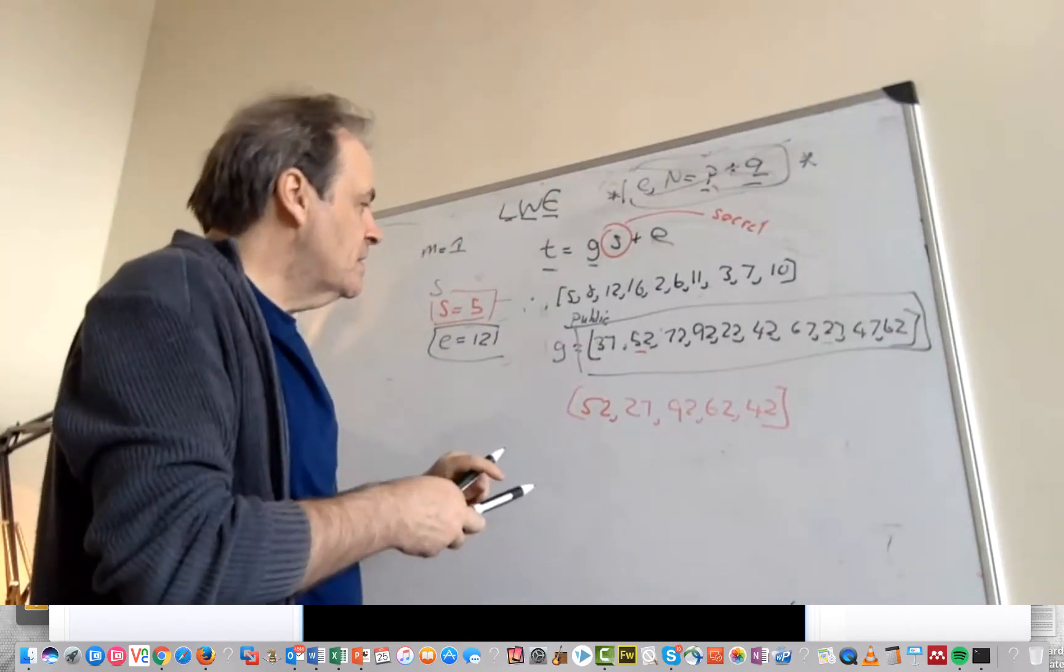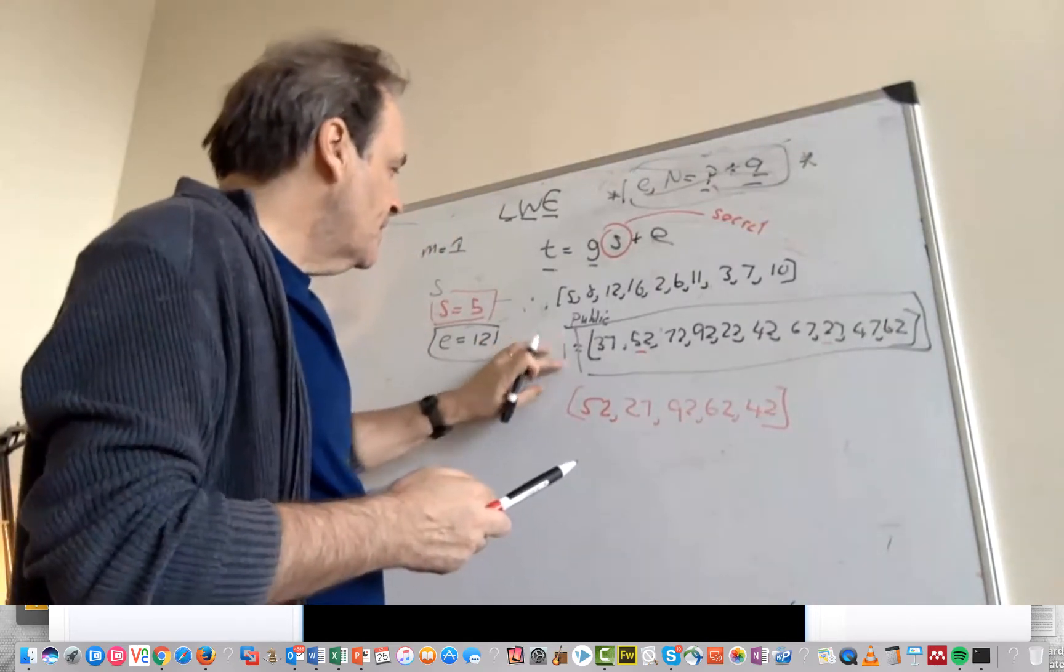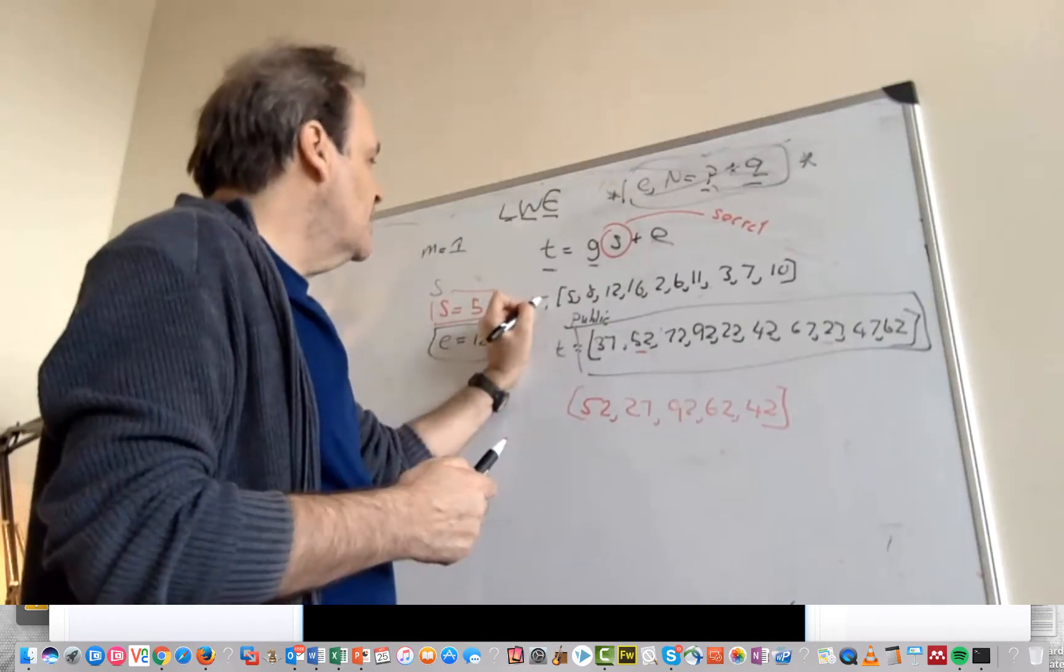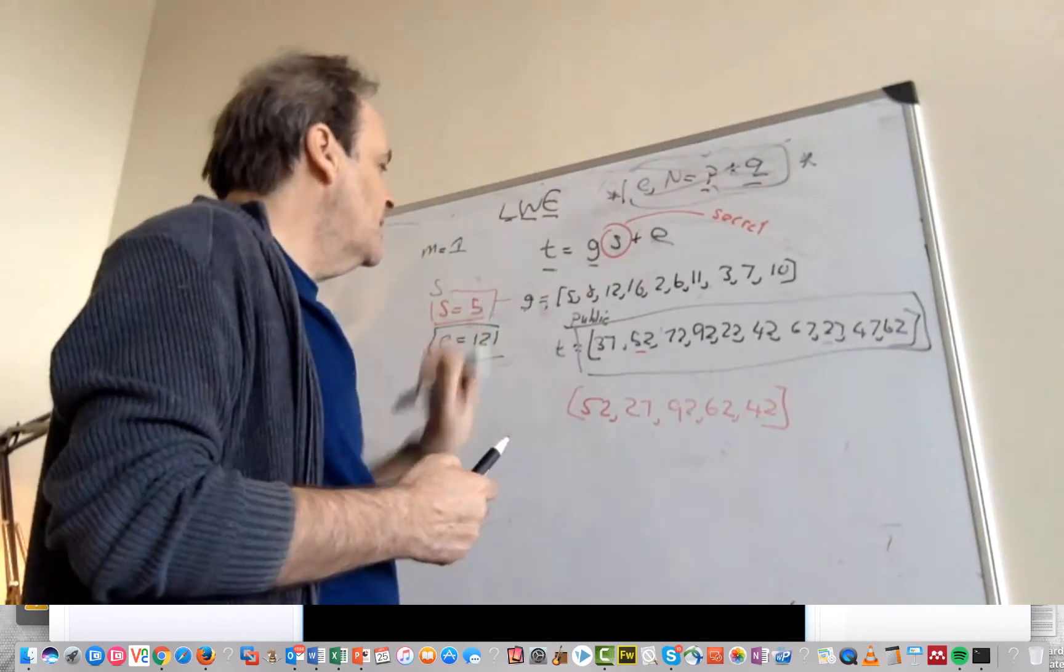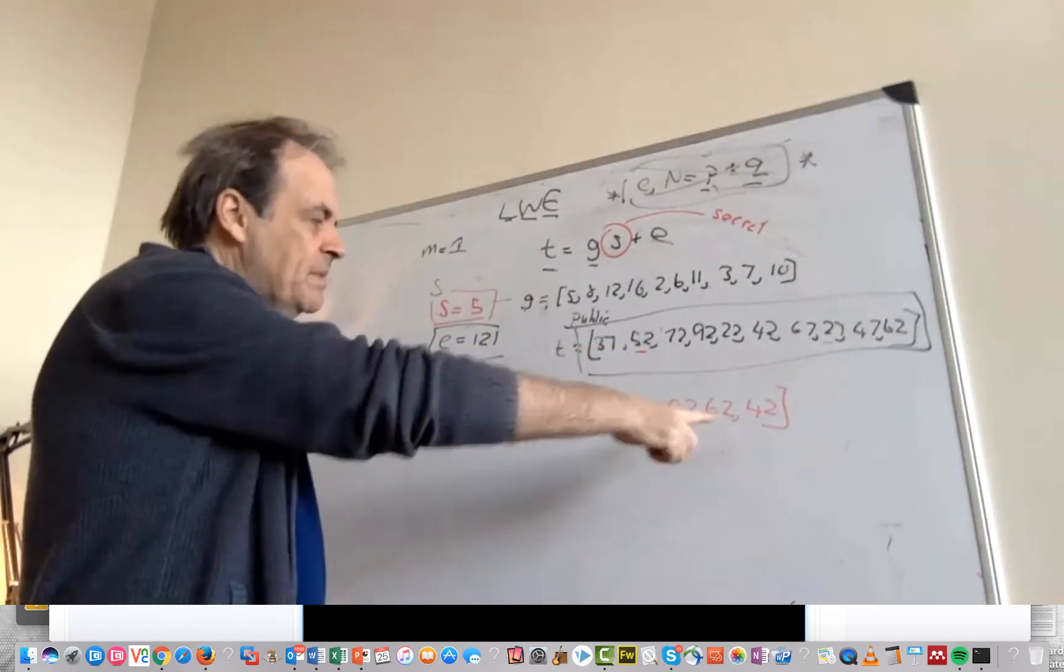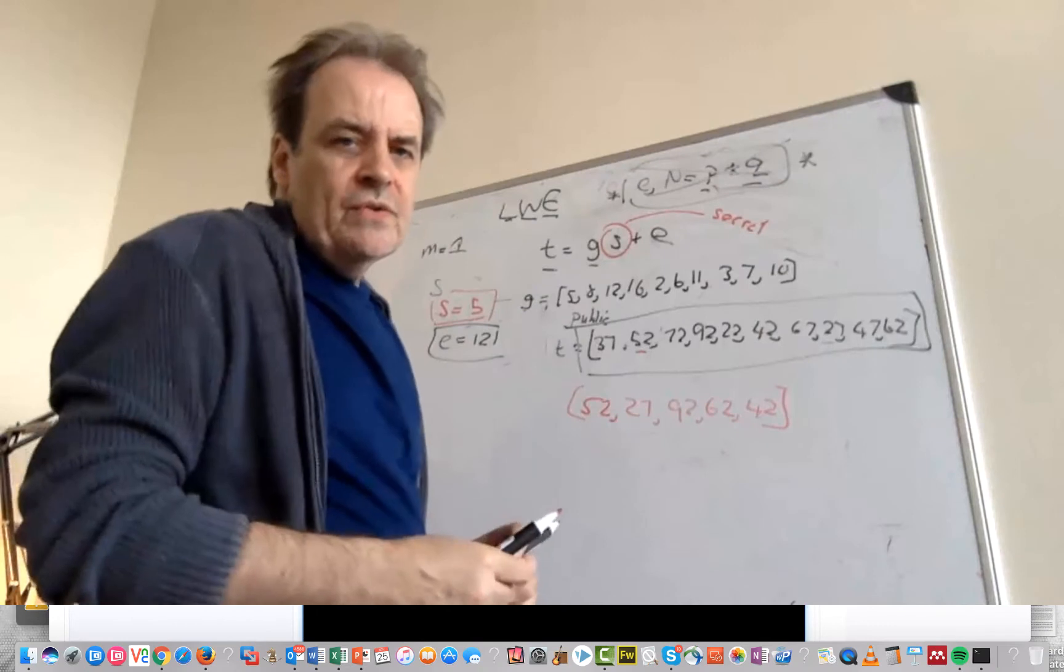So this is our value of T that we get. This is G and T and now we generate a public key based on those values.